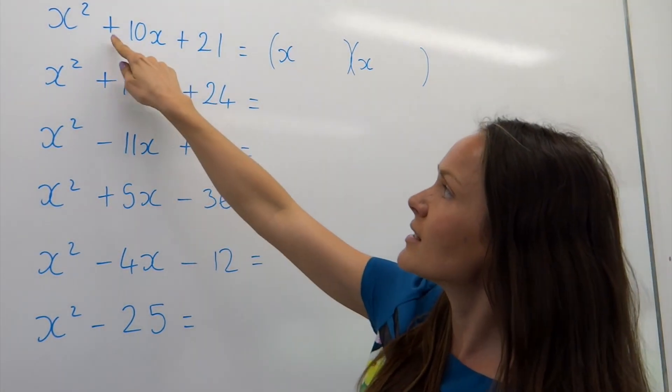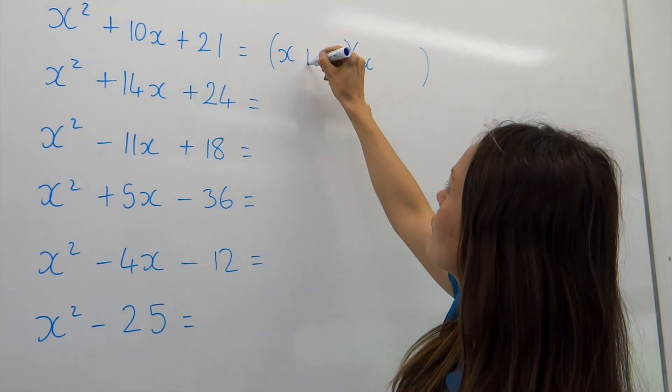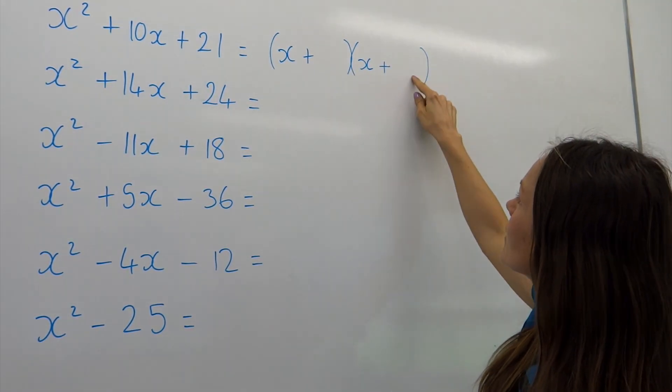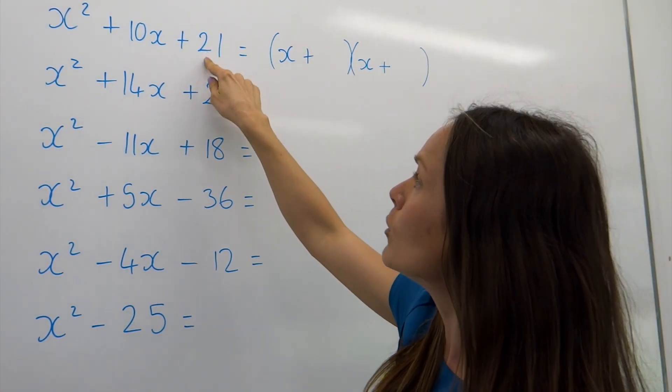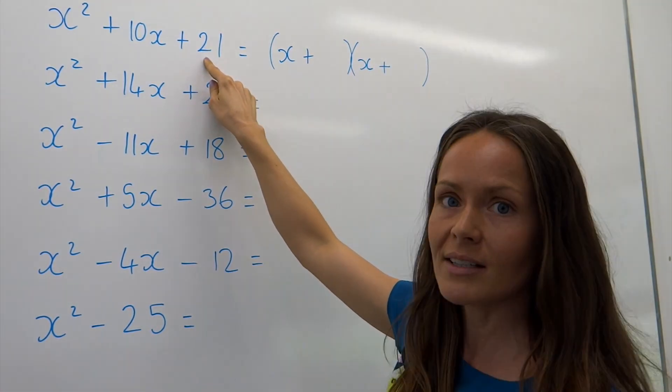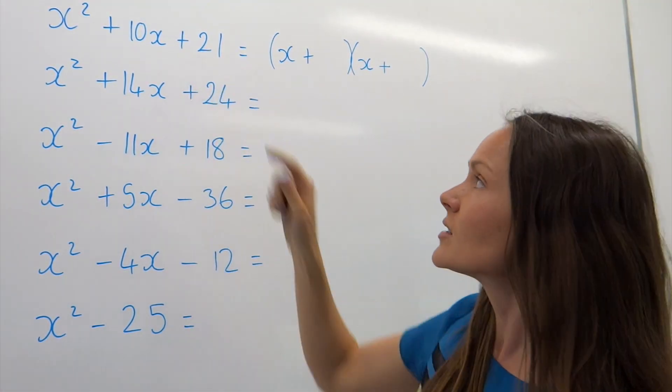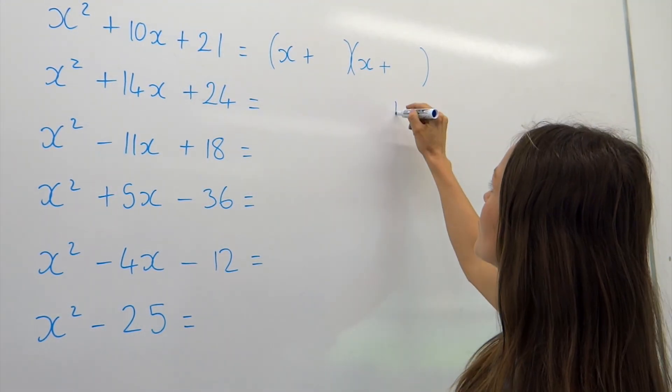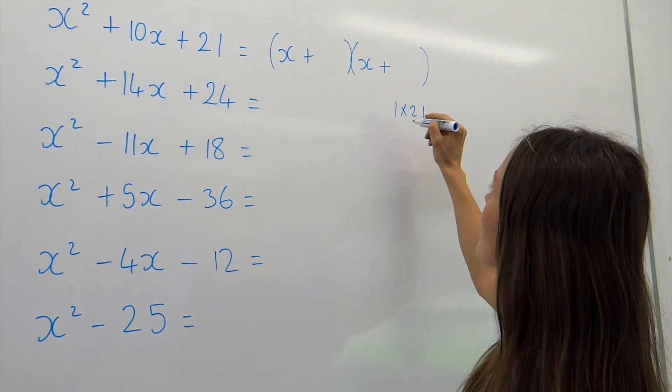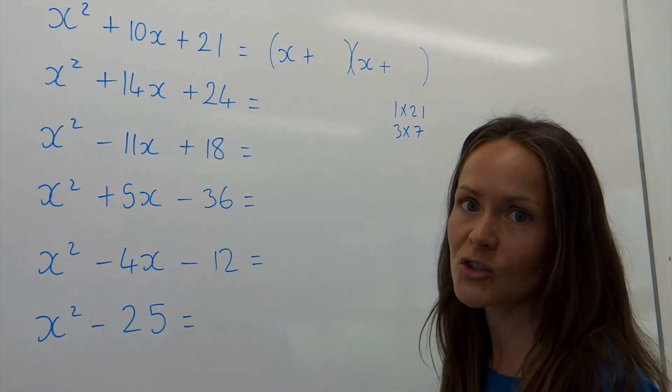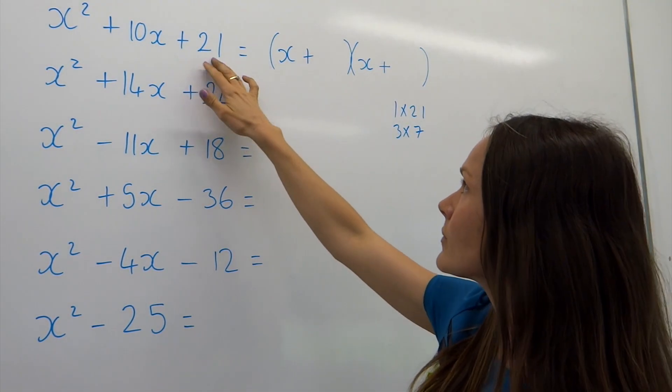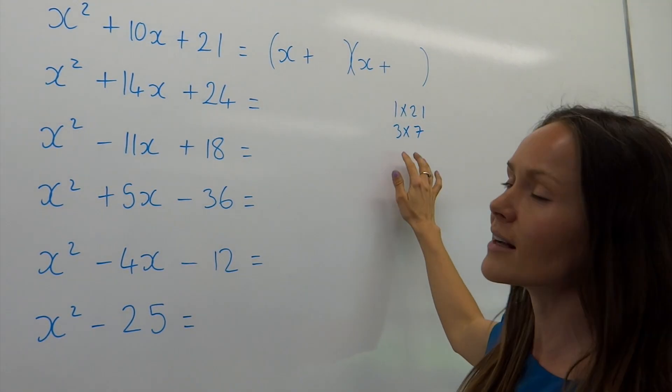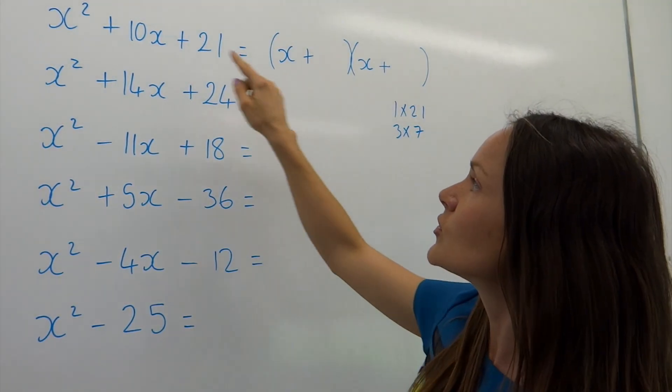Now, because these are both plus, I know that these have to be both plus as well. And to find this number here, we have to think about what multiplies to give this. So what are the factors of 21? There could be more than one pair of factors. In this one, you could have 1 times 21 or 3 times 7. So there aren't too many factors for 21.